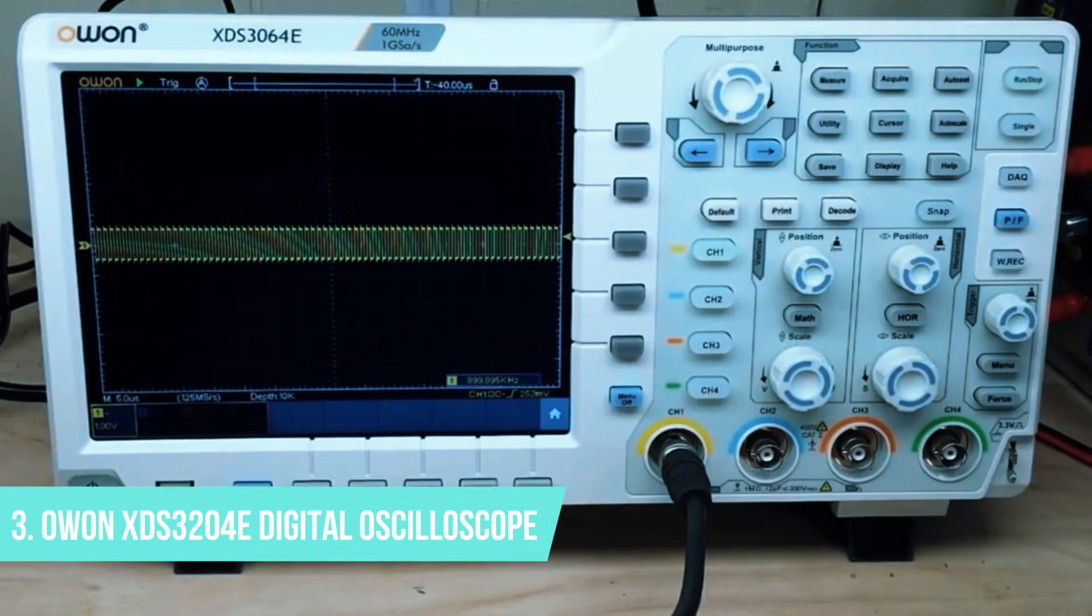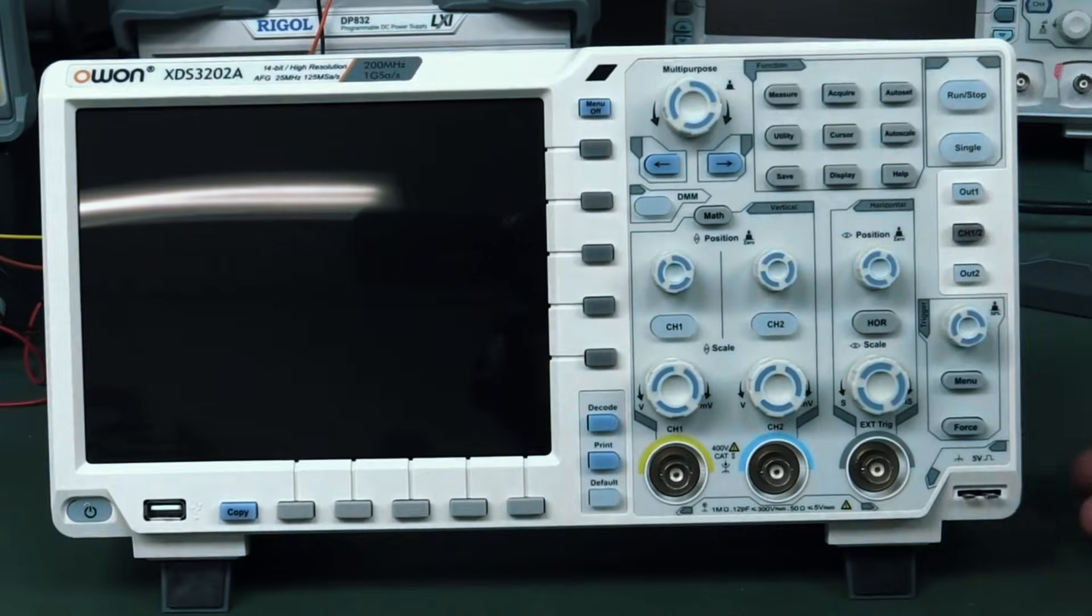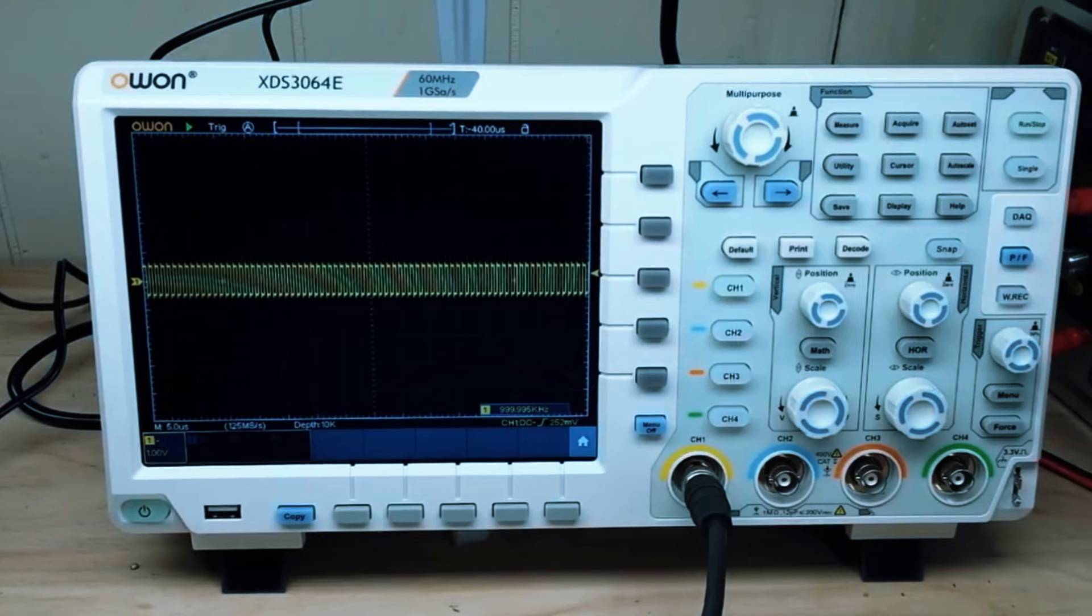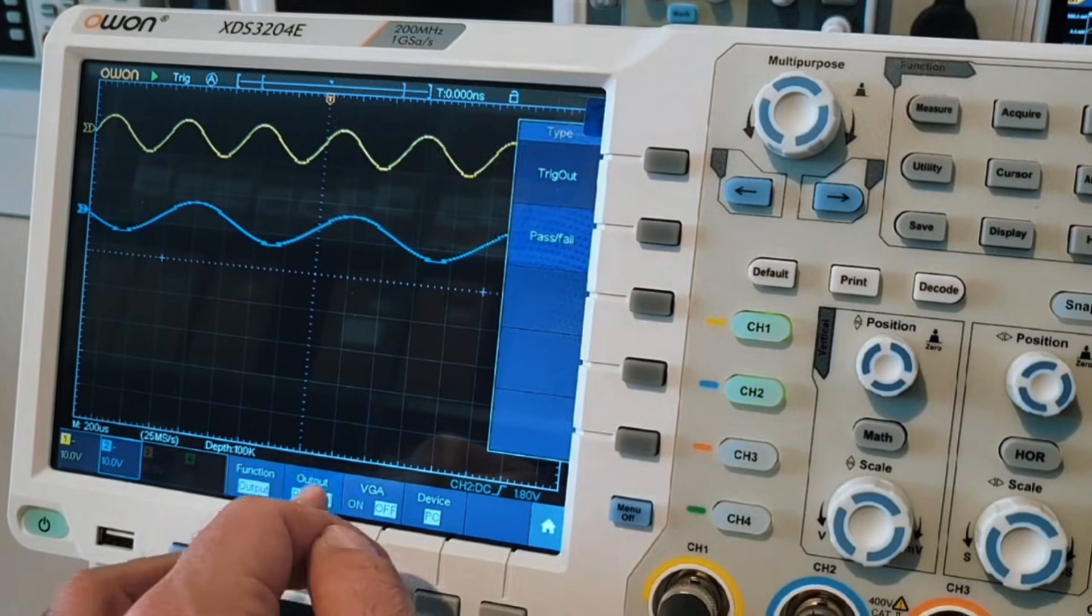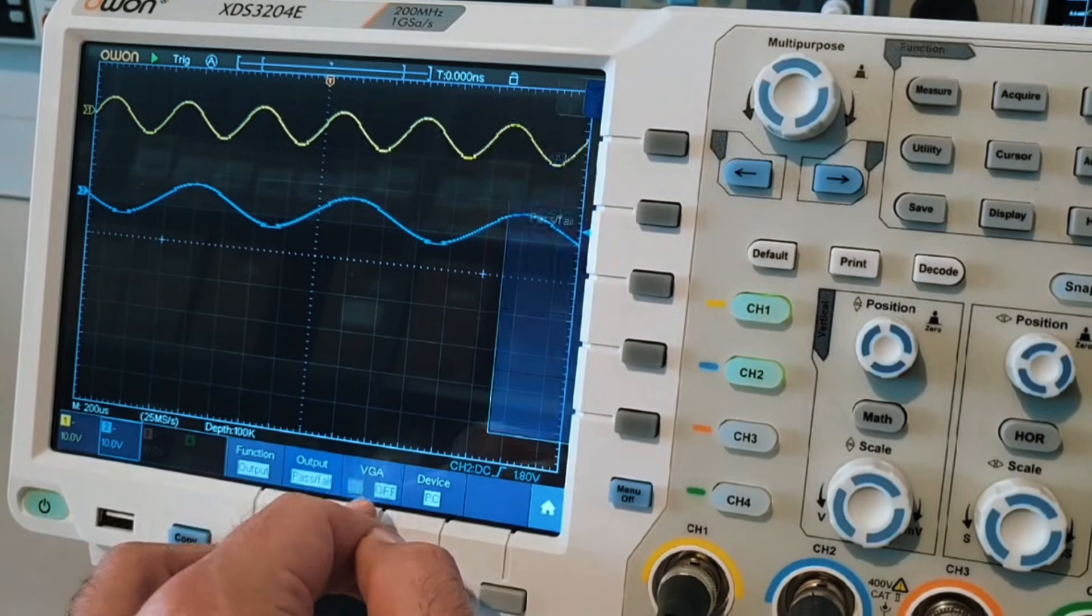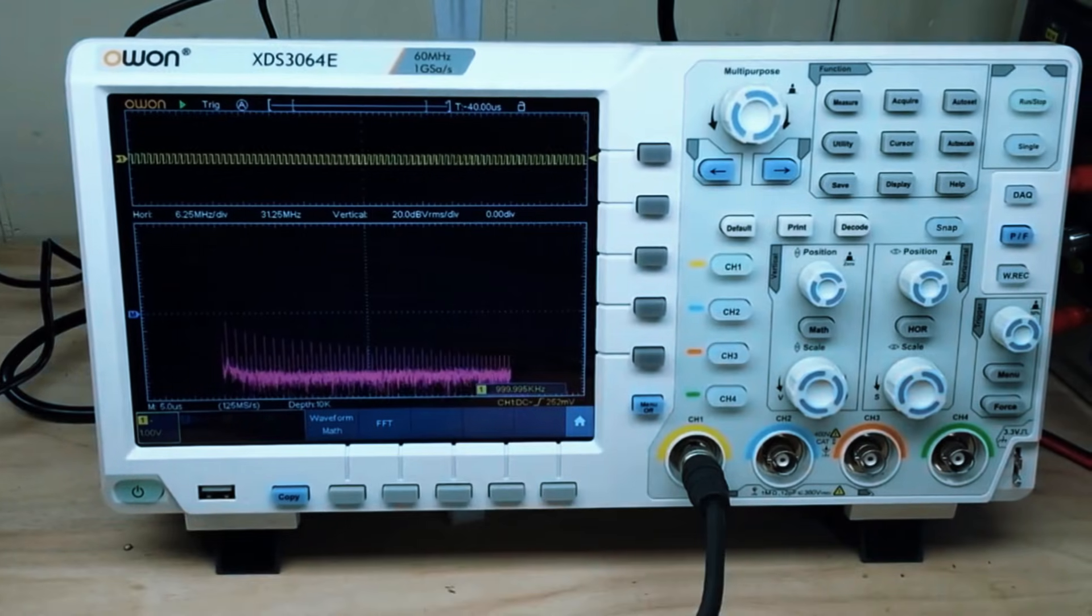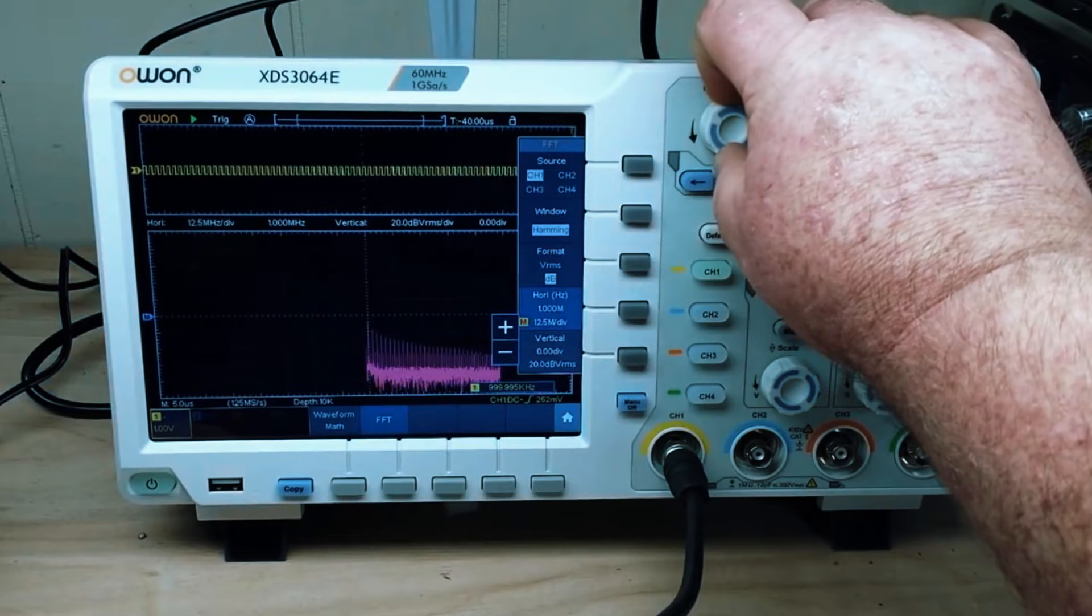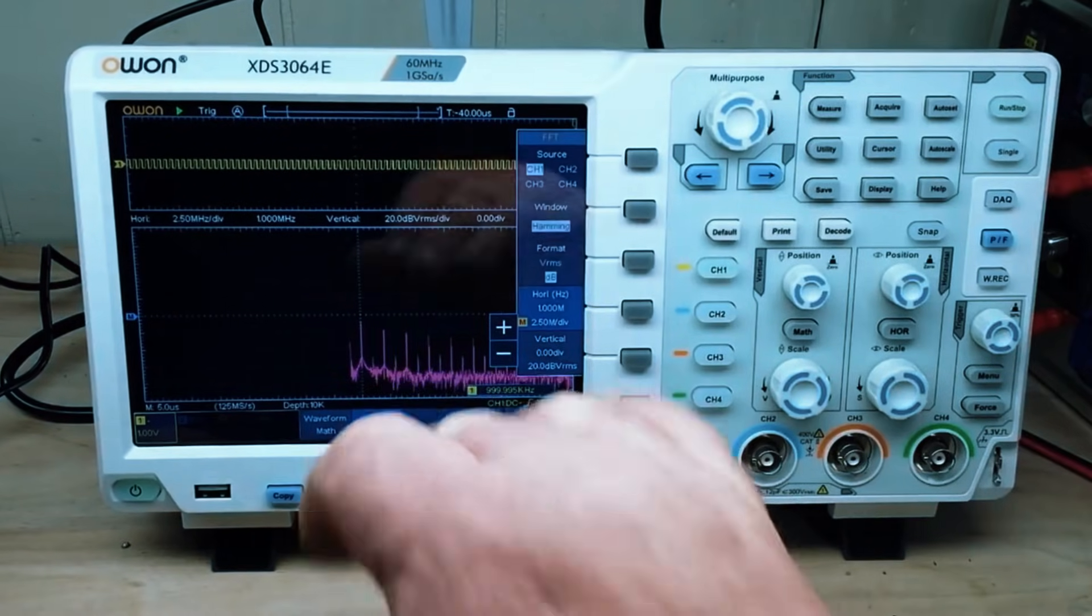Number 3: ONXDS-3204E Digital Oscilloscope – Best Value for Professionals. Now we're stepping into serious professional territory. The ONXDS-3204E is a higher-end digital oscilloscope designed for engineers, researchers, and professionals who need high accuracy, deep memory, and multi-signal analysis. Unlike budget models that cater to beginners, this scope is built for real engineering work, offering high-speed performance and precision at a price that still makes sense for professionals looking for the best value.